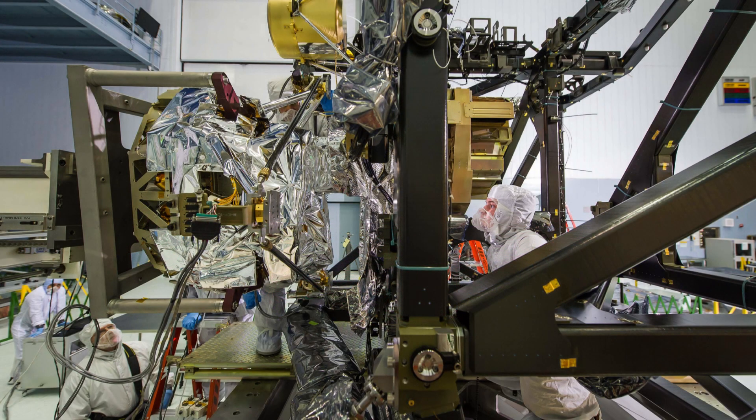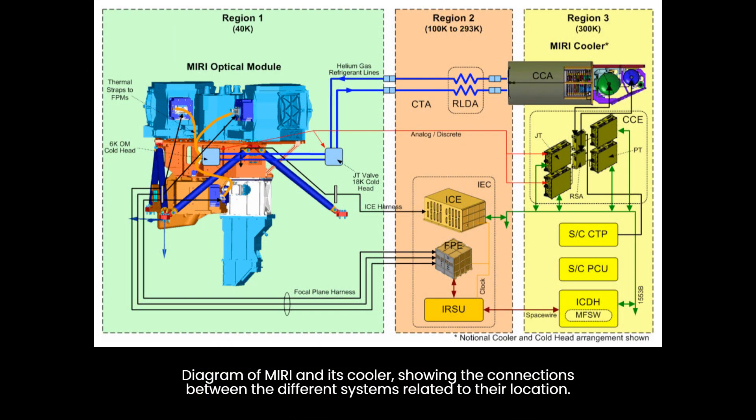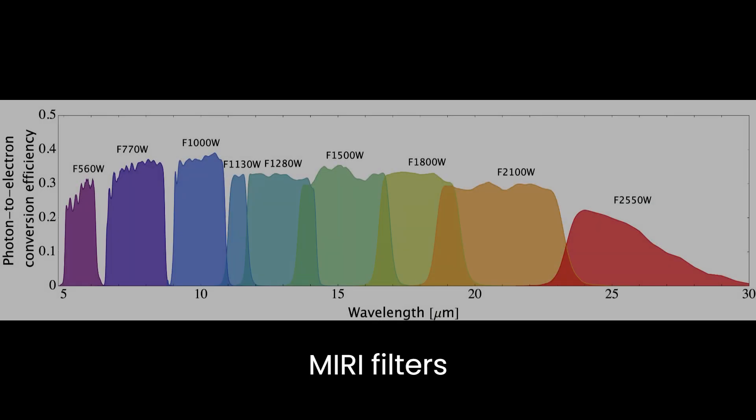Enter MIRI, the mid-infrared instrument, a crucial component of the James Webb Space Telescope. MIRI operates at an astonishingly frigid temperature of minus 266 degrees Celsius, only 7 degrees Celsius warmer than absolute zero.